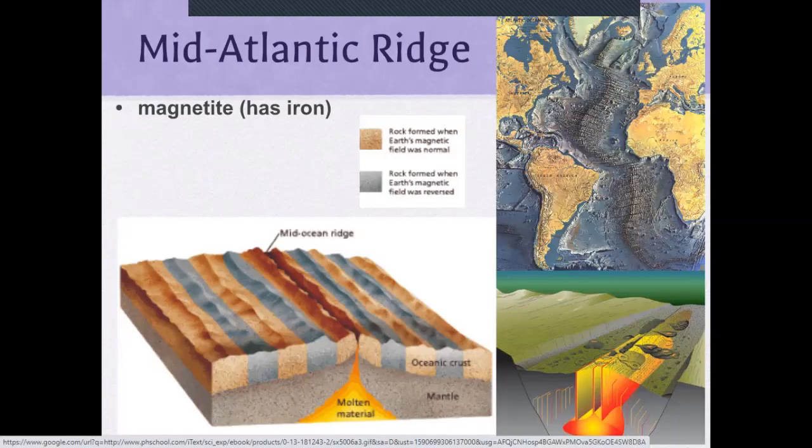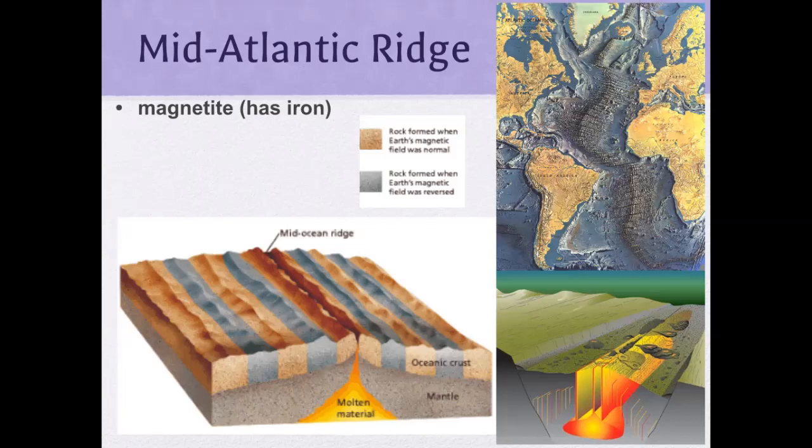Here are some more pictures of the mid-Atlantic Ridge and how those magnetites are pointing in different directions. You can see on this world map how the mid-Atlantic Ridge is very pronounced, and this is where scientists believe the sea floor is spreading.